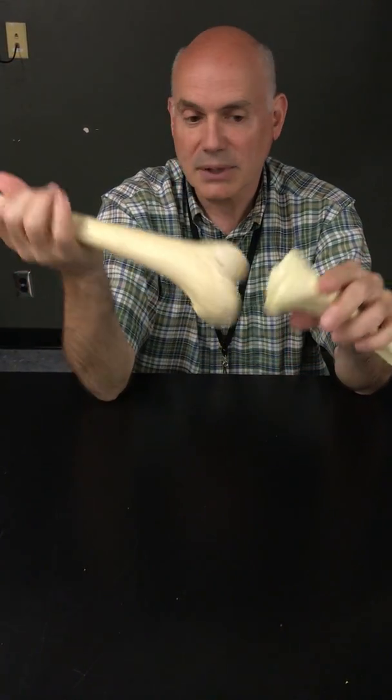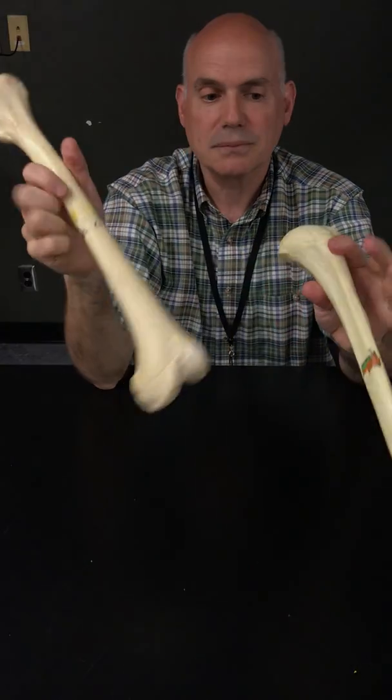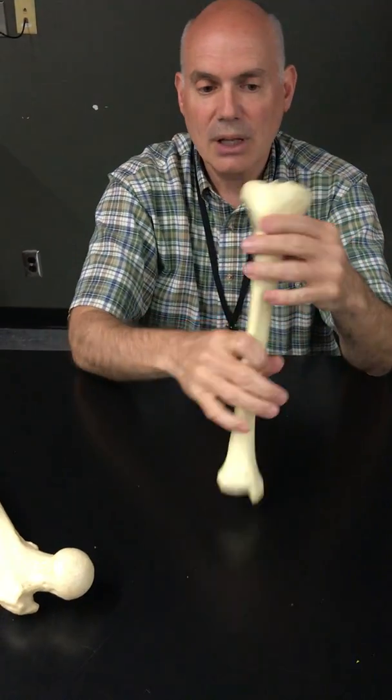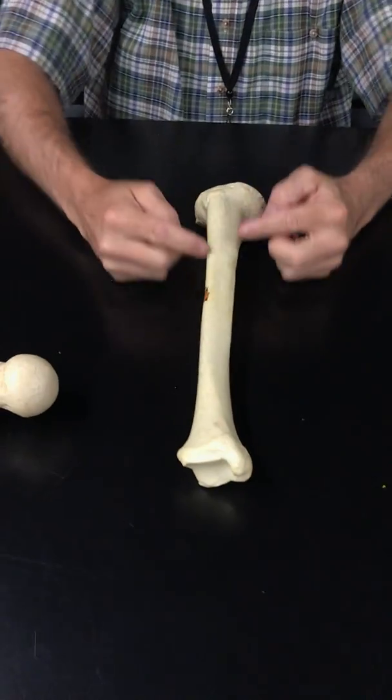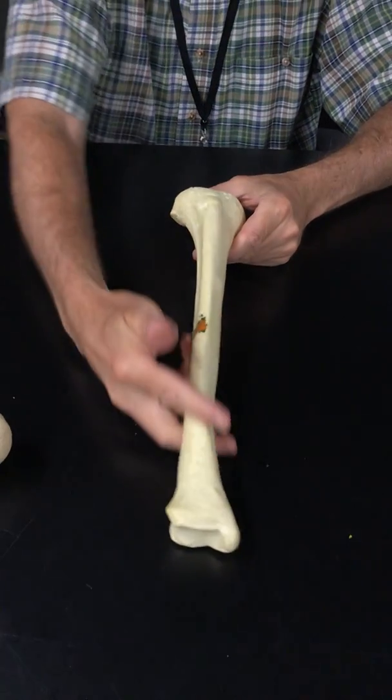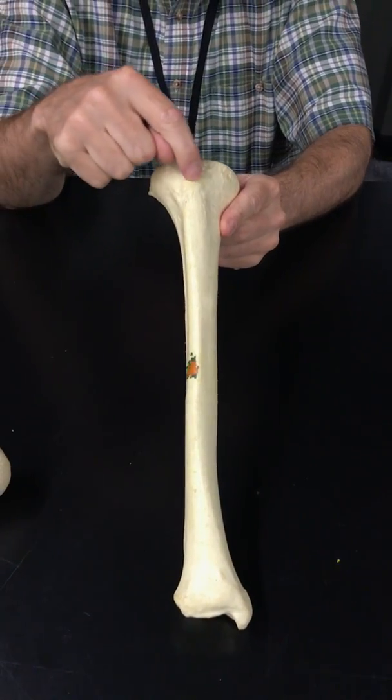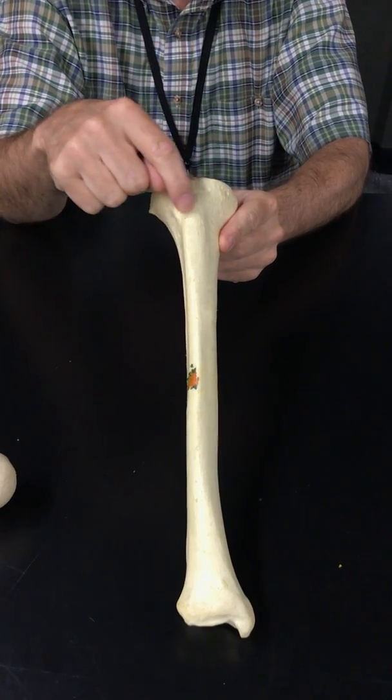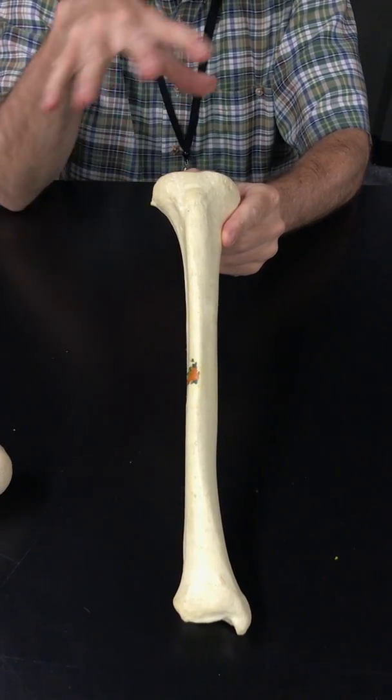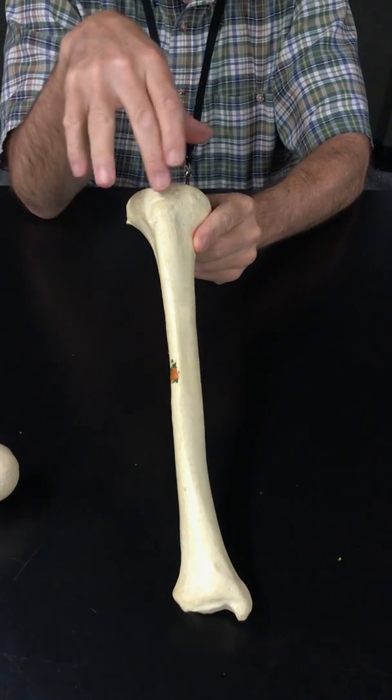There's a little elevation here - that's the tibial tuberosity. That's where your large quadricep muscle group attaches. It's an area common for inflammation. Now we're running down the shaft, and the posterior aspect is somewhat smooth.